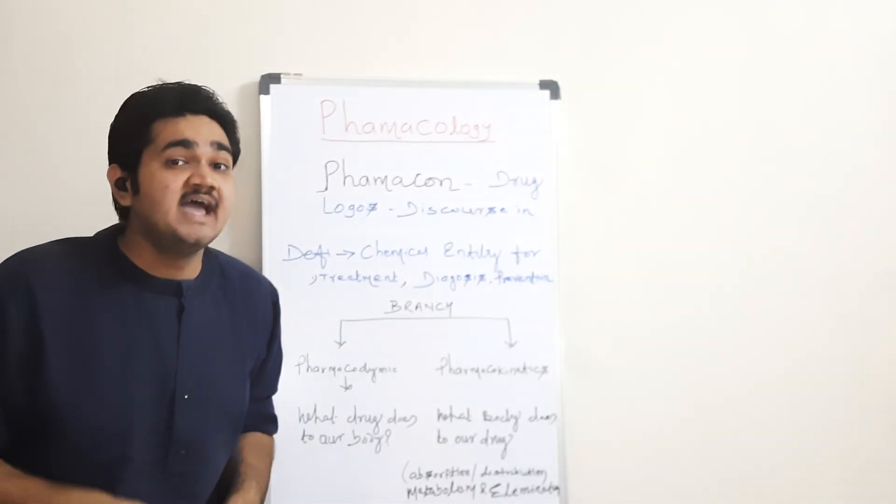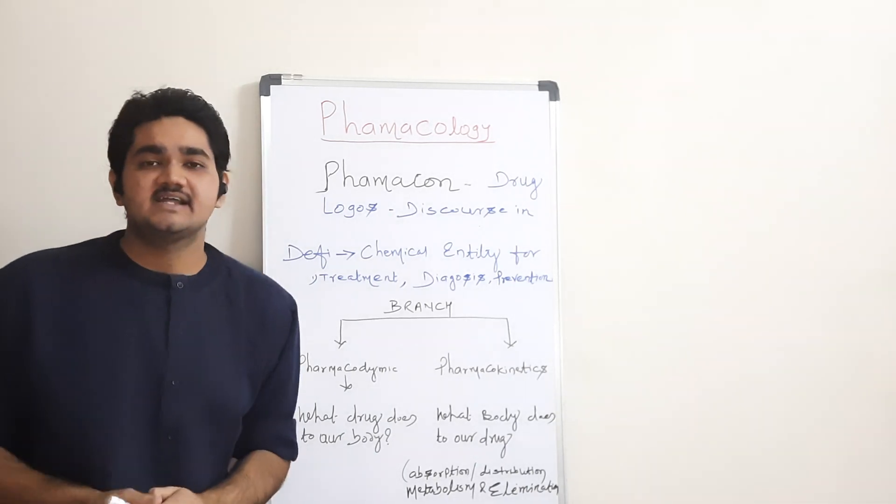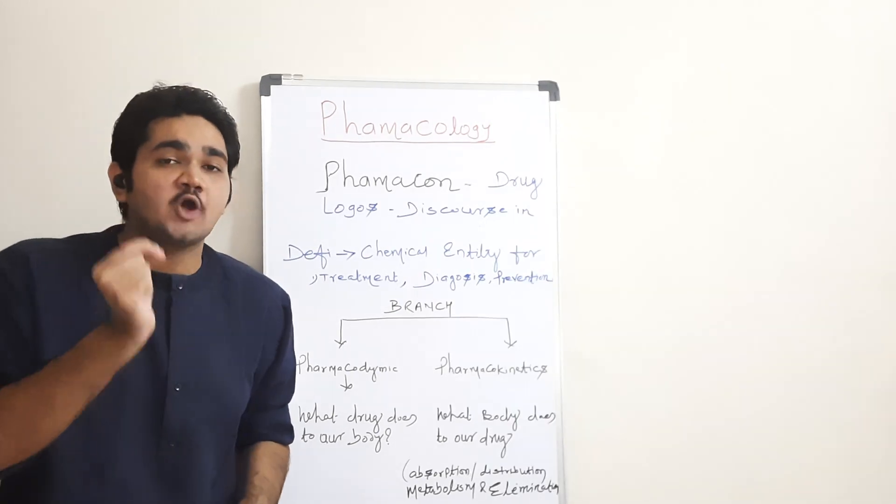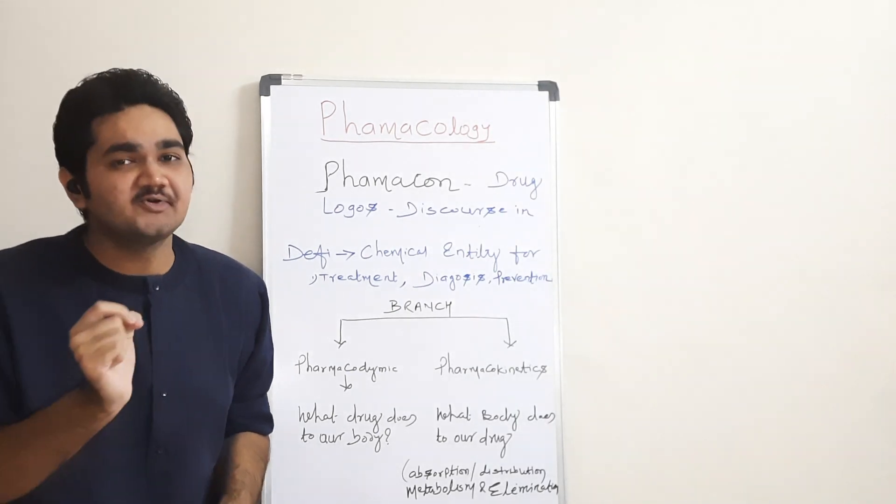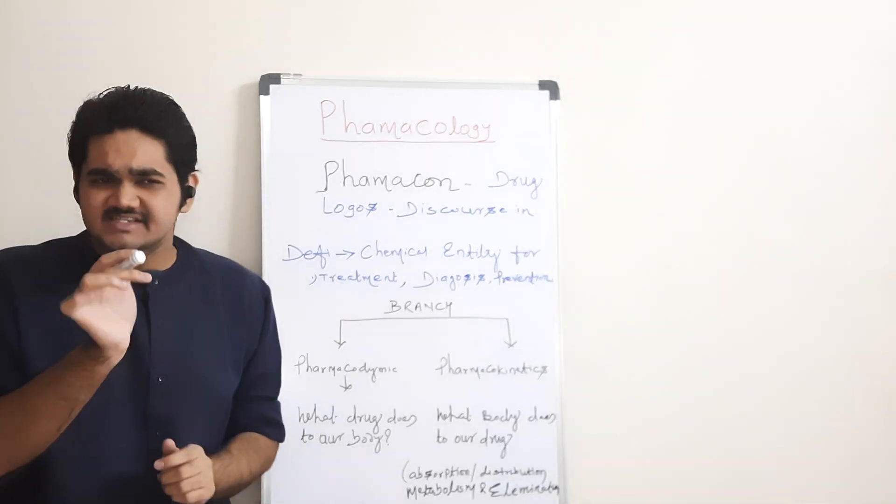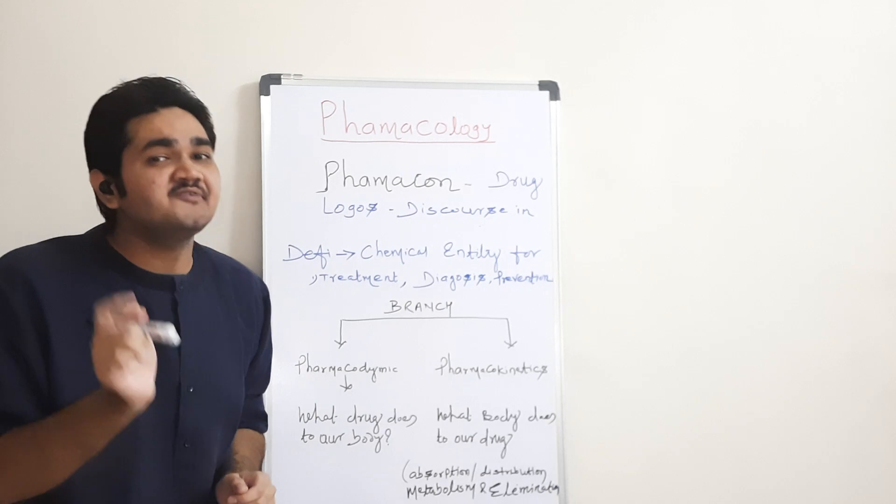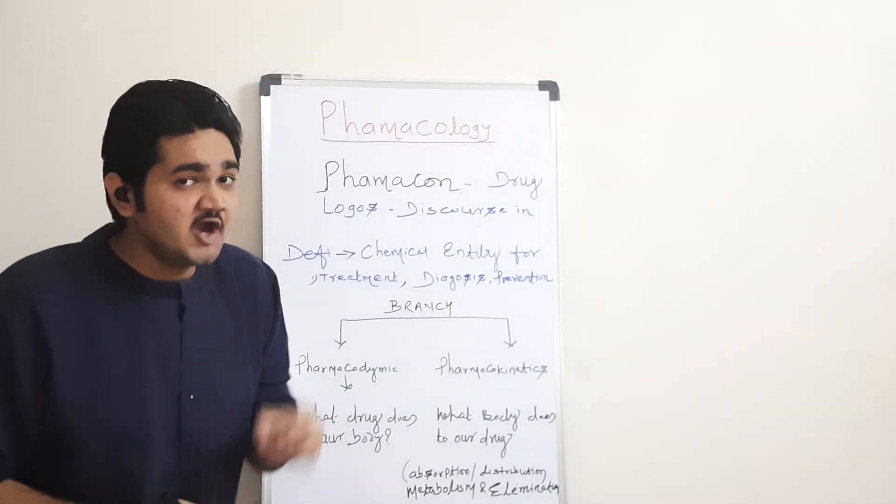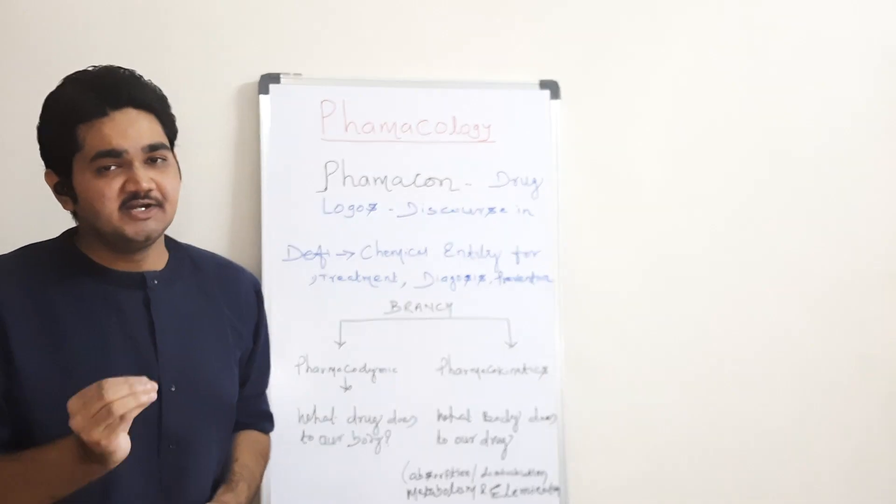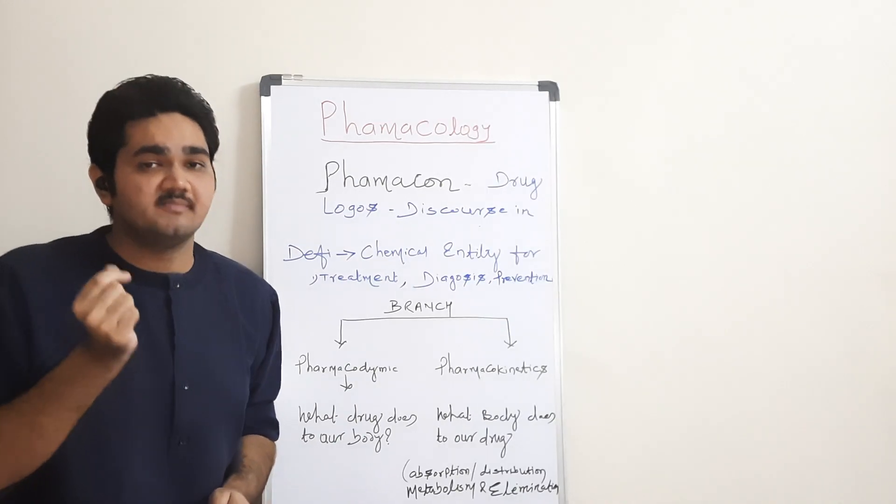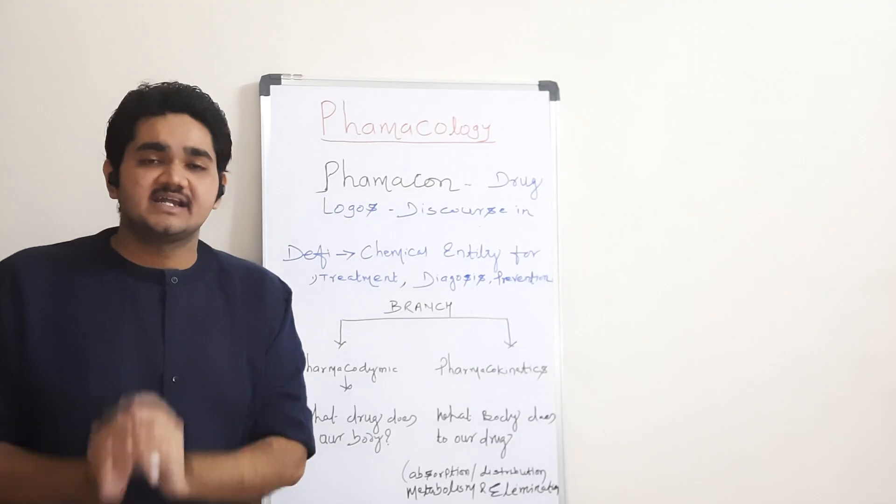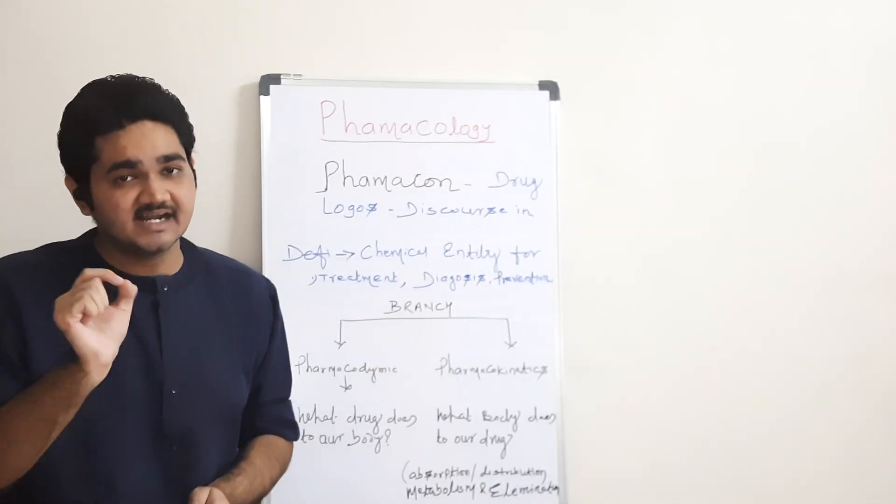Can drugs be used for diagnostic purposes? The answer is yes. Let's consider an example - an autoimmune disease called myasthenia gravis. If a doctor wants to find out whether a patient is suffering from myasthenia gravis or not, the doctor uses a drug called edrophonium. This drug is used for the diagnostic purpose of myasthenia gravis, and there are many such examples.